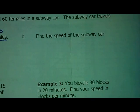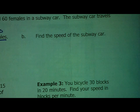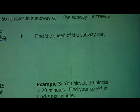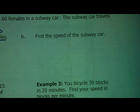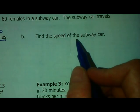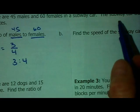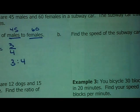Alright, for letter B, we are now supposed to find the speed of the subway car. Now, we're not actually finding a ratio here. Well, it's a form of a ratio. We're finding a rate. But, there's two different units for this. Because it says that the subway car travels 2.5 miles in 5 minutes.